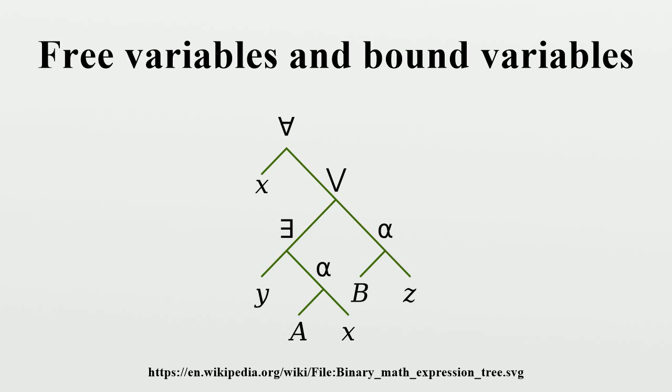The identity of the referent can be shown using co-indexing subscripts where i indicates one referent and j indicates a second referent. Thus, the sentence Lisa found her book has the following interpretations: Lisa-i found her-i book. Lisa-i found her-j book.